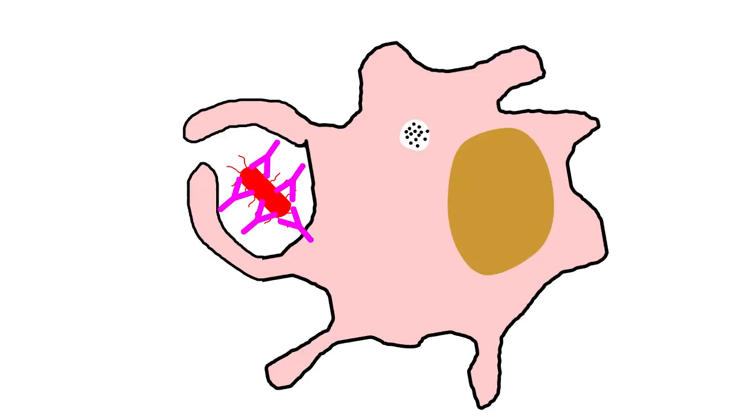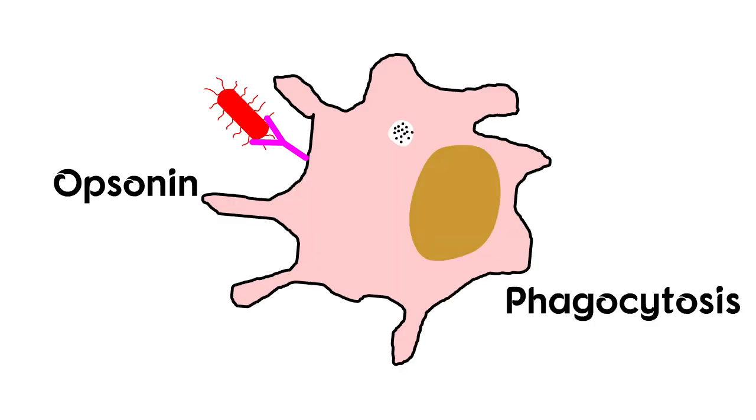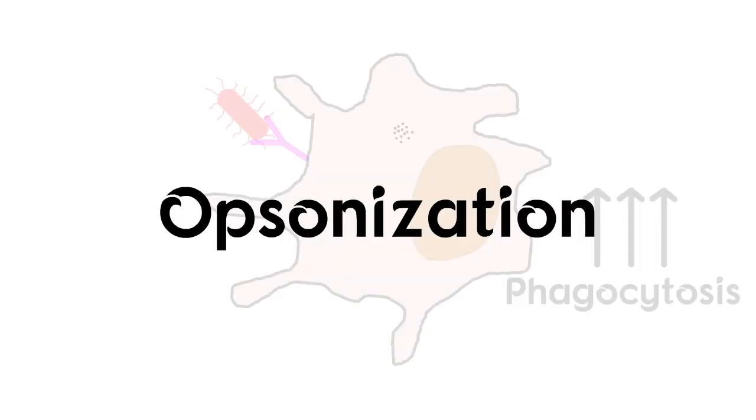If the antigen is bound to antibodies, phagocytosis occurs more readily than antigen alone. Thus, antibody functions as an opsonin, a molecule that binds to both antigen and macrophage and enhances phagocytosis. This process is called opsonization.